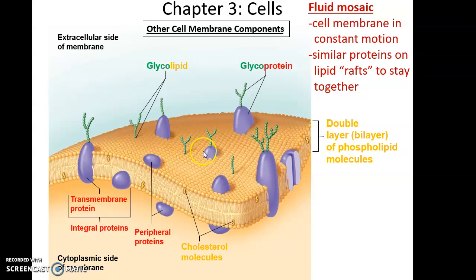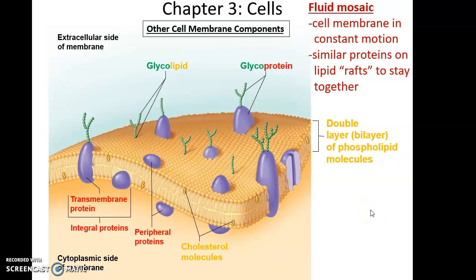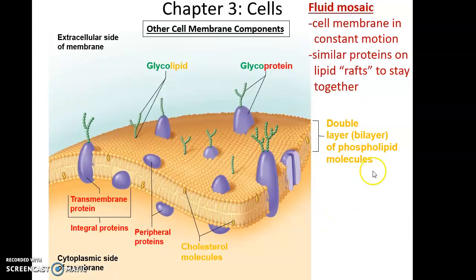Some proteins, glycoproteins, or glycolipids work together in a function and form what are called lipid rafts — portions of the cell membrane that move around together. Overall, the cell membrane is not a static structure; it is almost a fluid — all the proteins and molecules are constantly moving. This is referred to as the fluid mosaic model: fluid because everything is moving, and mosaic because you have these lipid rafts that stay together within the membrane.